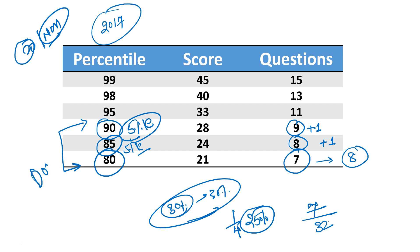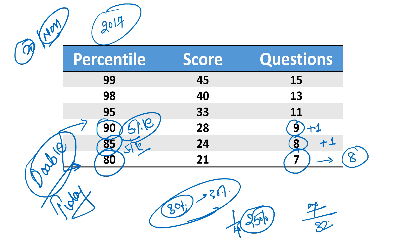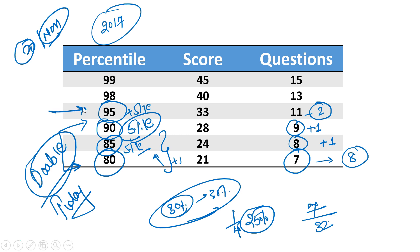From here onwards, things get a little bit tough. If I jump from 9 to attempting 11 questions correctly, that gets me 95 percentile. So from 9 to 11 — plus two questions — gives plus 5 percentile. Earlier it was plus one question for plus 5 percentile, now it's plus two questions for plus 5 percentile. If I do 11 questions out of 32, that's roughly 38 to 40 percent of the paper — I'm in a very good zone. 95 percentile is a very, very good score in LRDI. Trust me, if you practice enough over the next 30 days, you can see my other videos where I've explained how bringing 80 to 90 percentile in LRDI is actually possible.